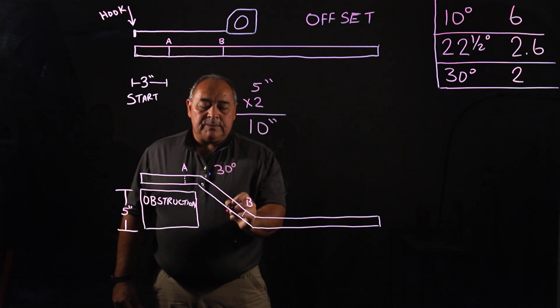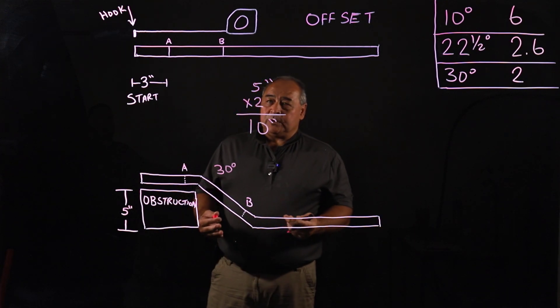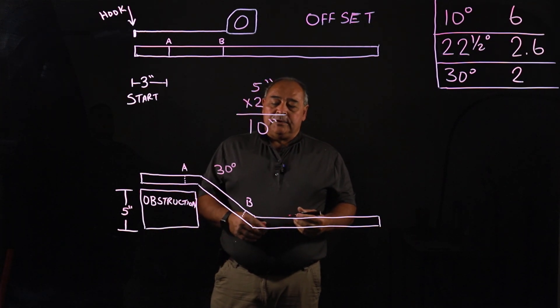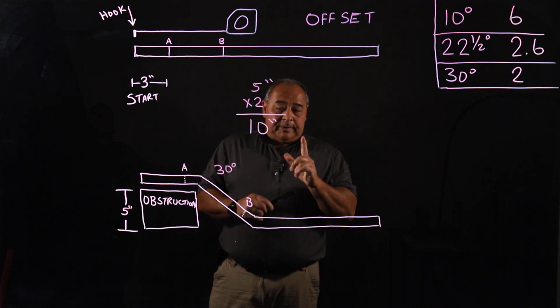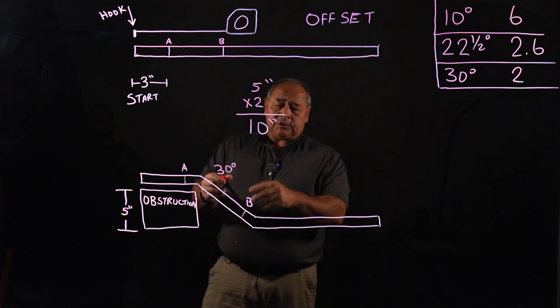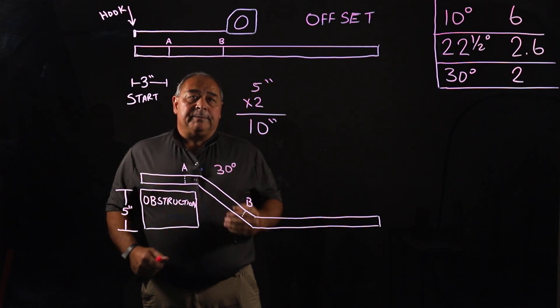So that's what I would choose and that's what I suggest that you guys would choose as well for a five inch offset, to use 30 degree bends. There's going to be two bends and there's two marks and they're opposite each other to make an offset.